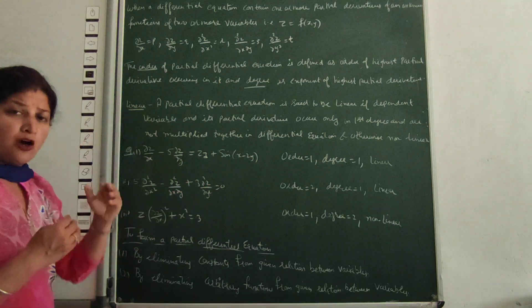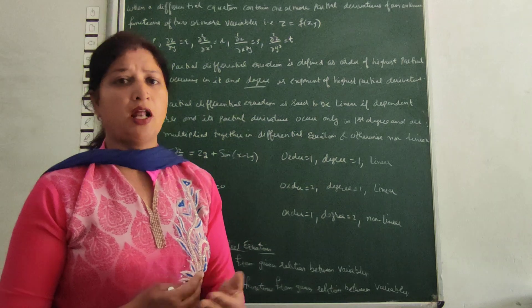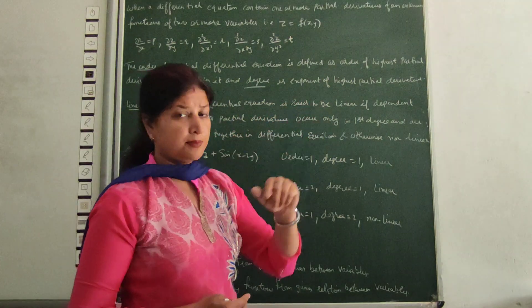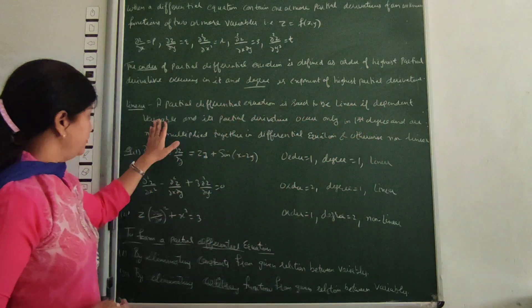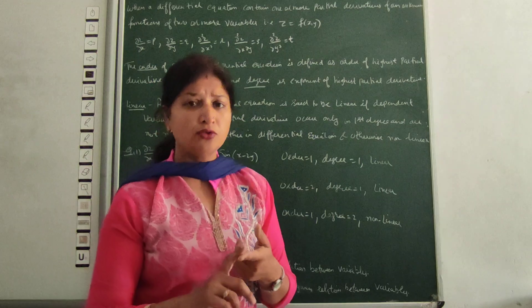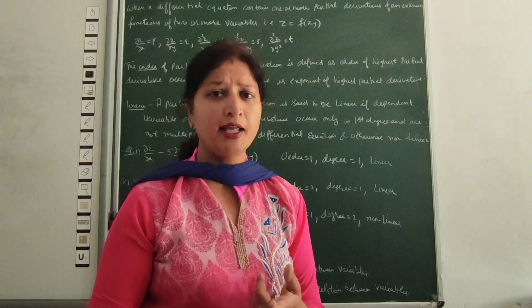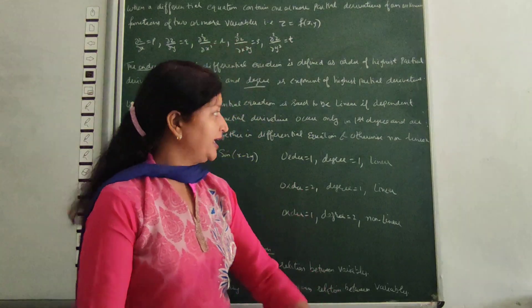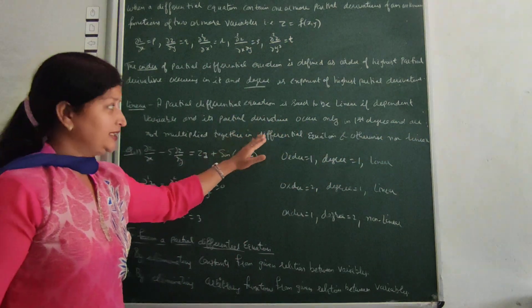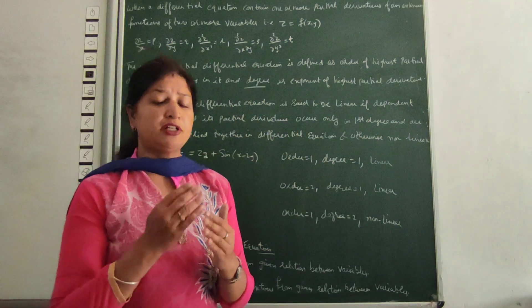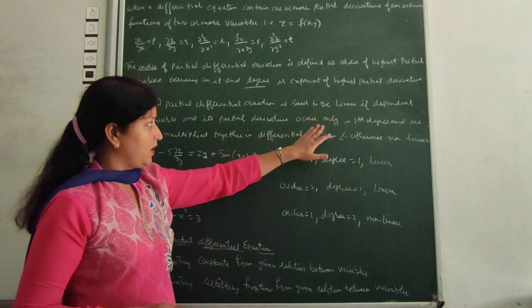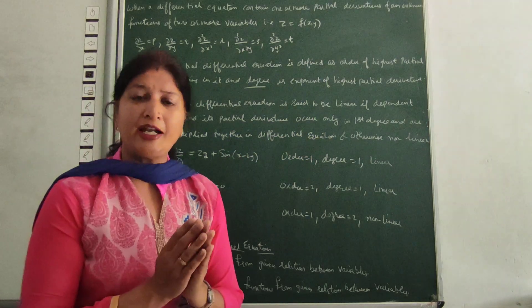Next is linear and non-linear equations. A partial differential equation is said to be linear when the dependent variable and partial derivatives occur only in first degree, and the derivatives are not multiplied together in the differential equation.